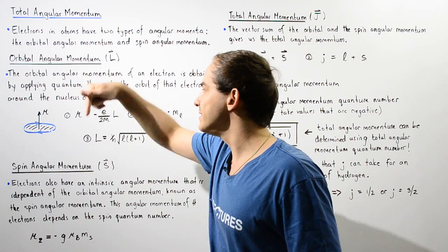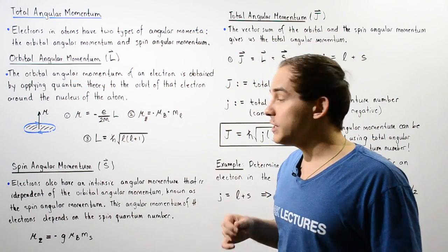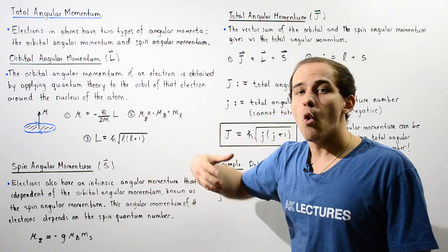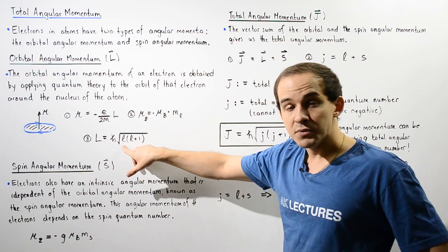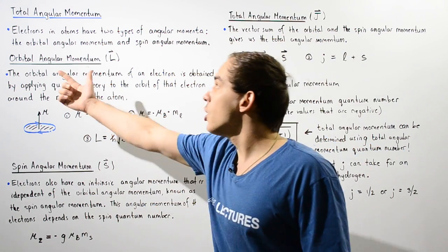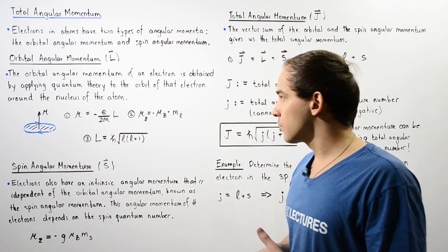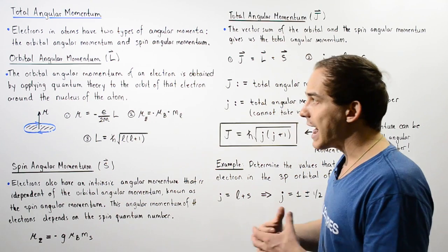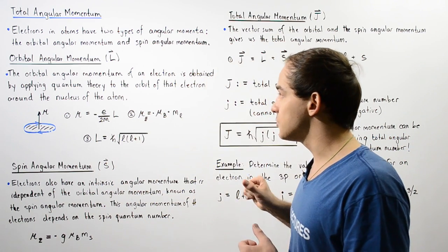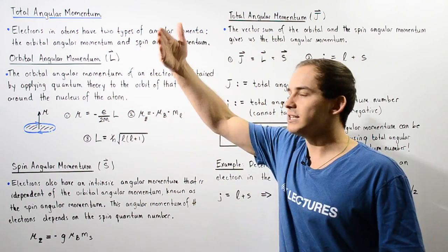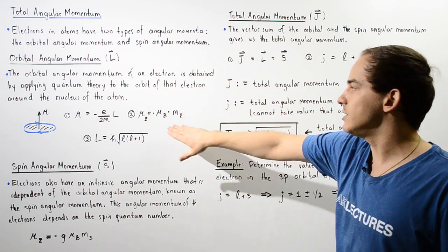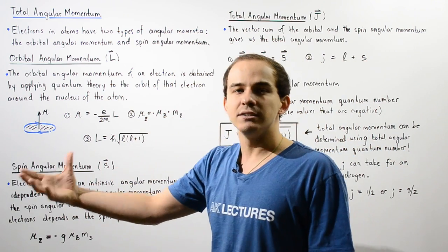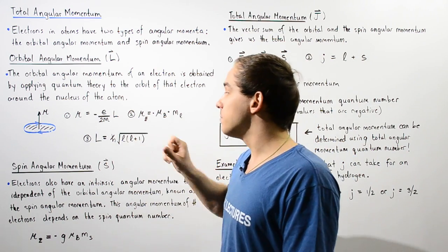So if L points up, mu points downward and vice versa. Equation three tells us that the orbital angular momentum uppercase L can be calculated using the orbital quantum number given by lowercase L, so the orbital quantum number determines the orbital angular momentum. Equation two is a specific case for when the external magnetic field points along the z-axis. In that case, mu points along that same axis and is calculated using the Bohr magneton mu-B, which is a constant, and ML, the magnetic quantum number, which depends on the orbital quantum number L.